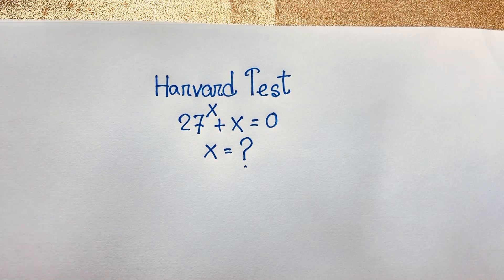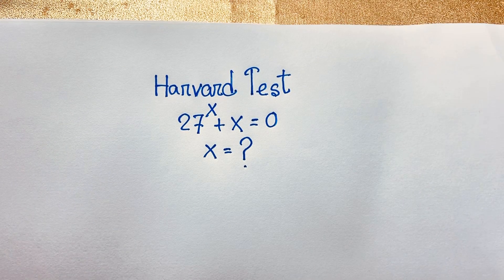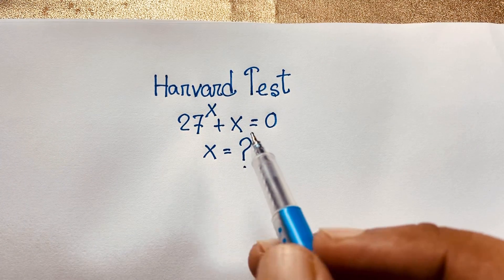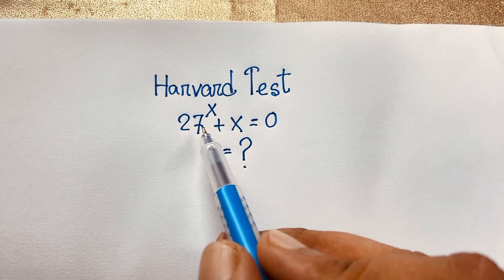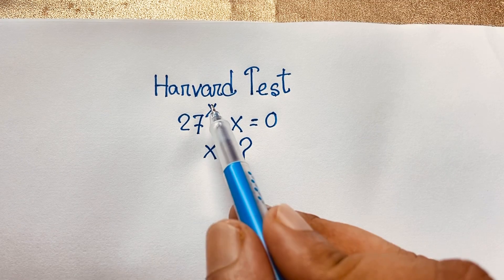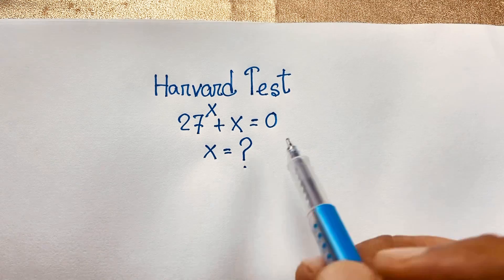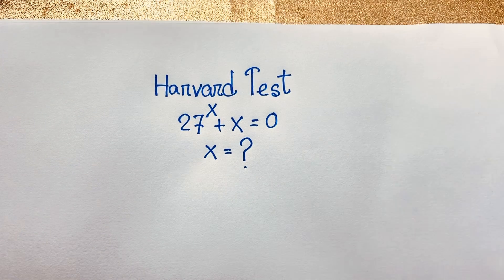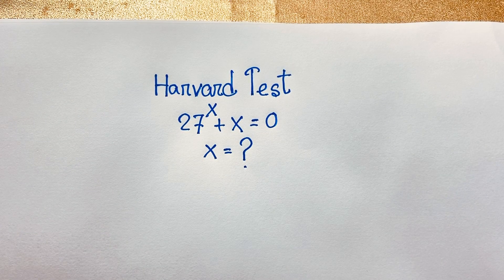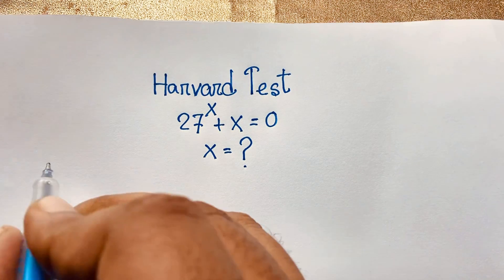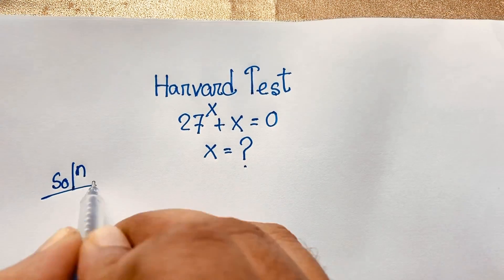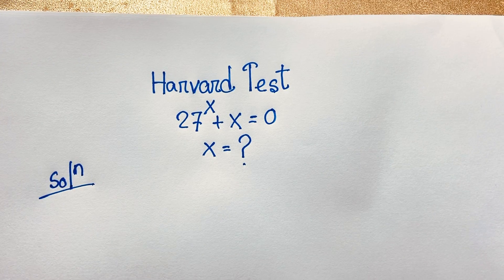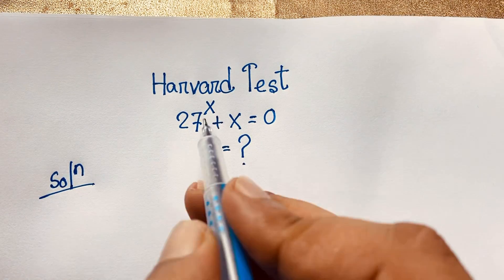Hello everyone, welcome to Russia's classroom. Today we are solving an interesting exponential math question: 27 to the power x plus x is equal to zero. What is x? I will solve this question using an easy method, though you can solve it using other methods as well.